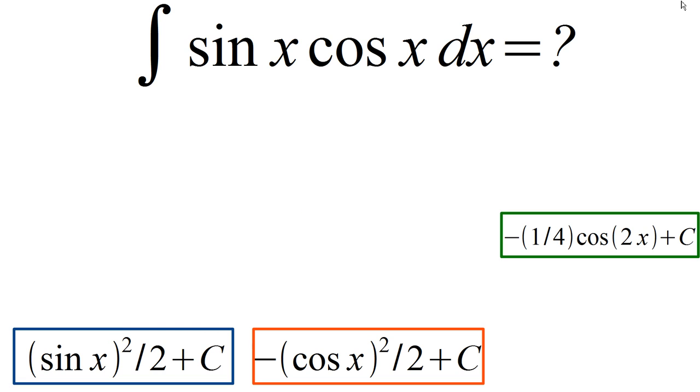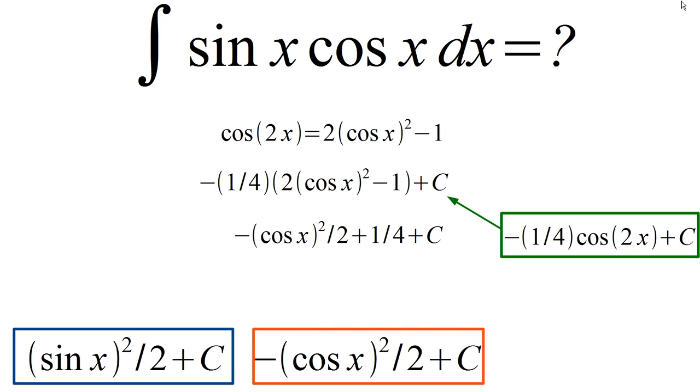Let's do the same thing. Let's show this third solution is equivalent to the second solution. We'll use the cosine double angle identity that cosine 2x equals two cosine squared x minus one. We'll substitute that into our third solution, and then we'll simplify to get, again, negative cosine squared x over two plus one fourth plus an arbitrary constant. So this shows the second and third solutions differ only by the constant of one fourth. Therefore, they're equivalent to each other because we can group the arbitrary constants together.